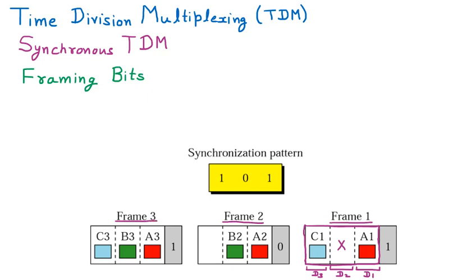In frame 1, frame 2, and frame 3, there is a number added — like 0, 1, and 1, giving the pattern 1, 0, 1. These are the framing bits. Beyond the actual frame data, we are adding something extra — this extra bit is called the framing bit. With every frame we add this bit, and because of that we achieve synchronization. There is a synchronization pattern of 1, 0, 1 assigned to frames 1, 2, and 3.